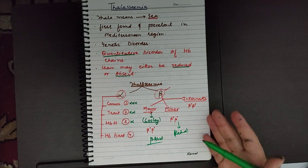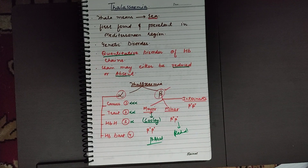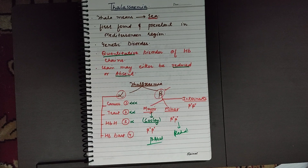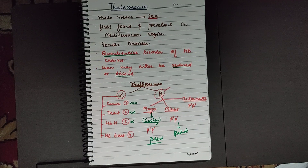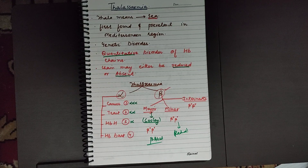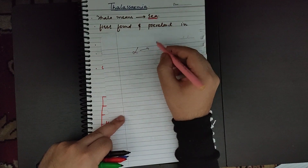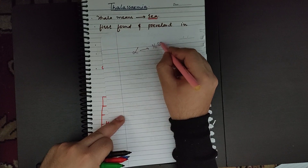In beta minor, beta chains are reduced in number. Beta major is a very dreadful condition and the symptoms are very severe. Coming to alpha thalassemia, it has four variants: alpha carrier, alpha trait, HbH disease, or HbBart's disease. This classification exists because the gene controlling alpha chains is present on chromosome number 16.